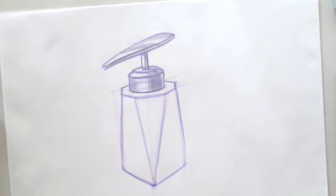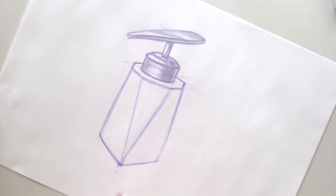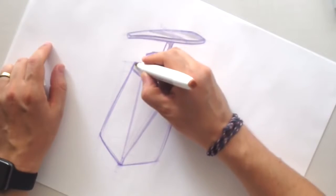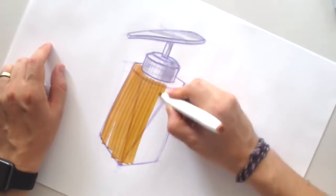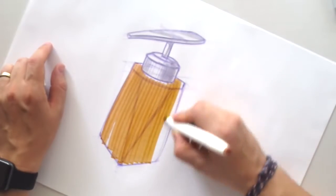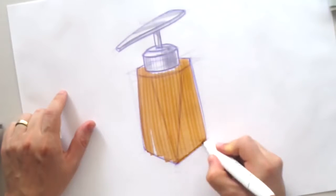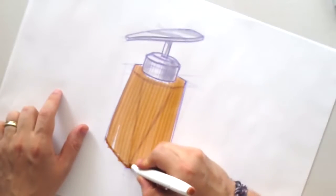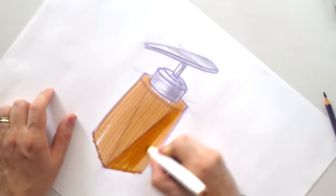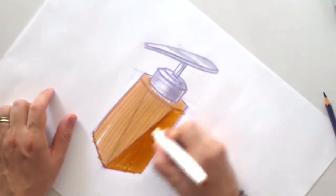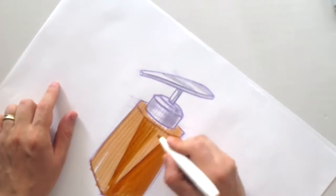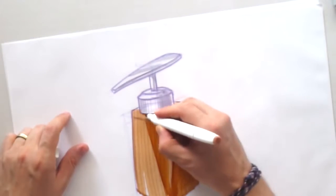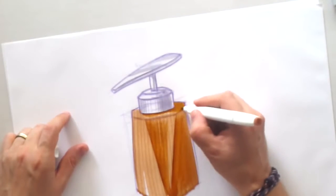To give some presentation of the metal. And now let's start with the wood by using another marker, actually it's Touch Me brand. The colors of this brand are more juicy, I would say.